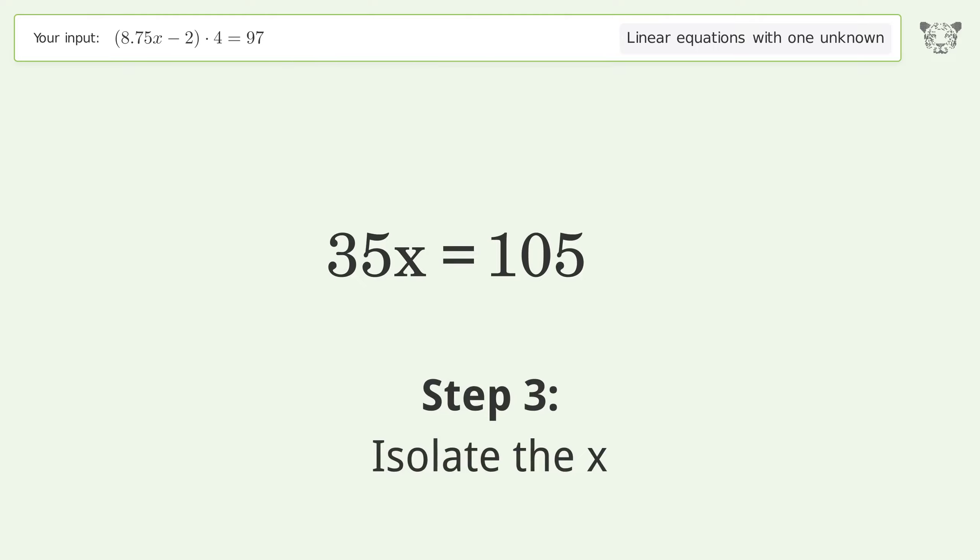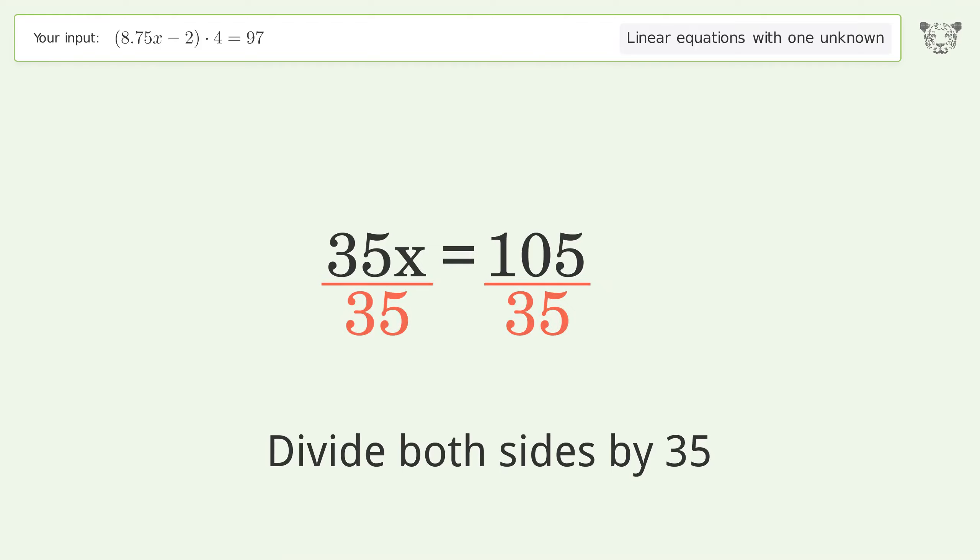Isolate the x. Divide both sides by 35. Simplify the fraction.